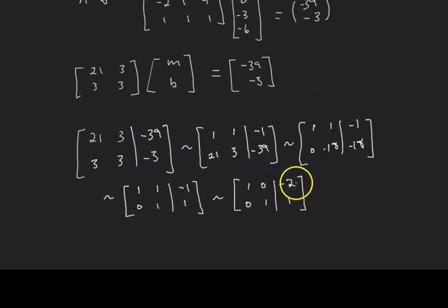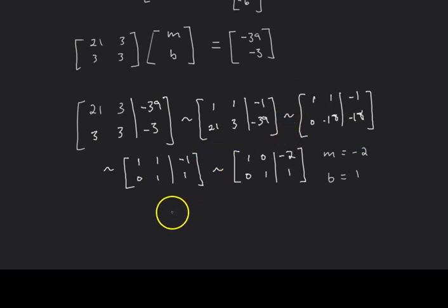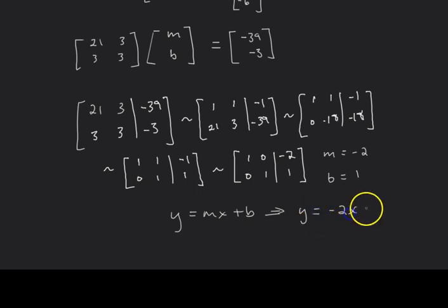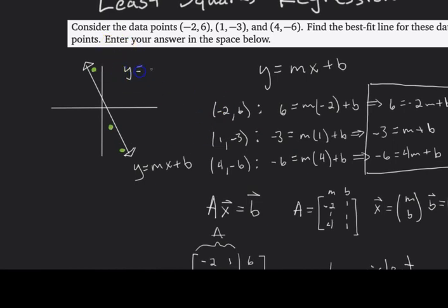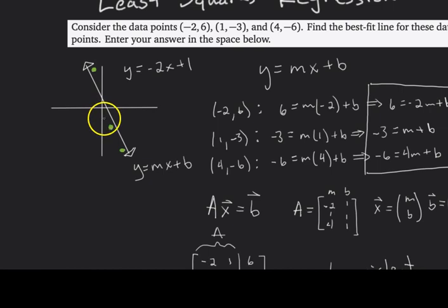I row reduced the augmented matrix all the way to reduced row echelon form, and the solution is m = -2 and B = 1. Now we can write our least squares regression line: y = -2x + 1. That's our answer. Checking visually against the sketch, this line intercepts at y = 1 and has slope approximately -2, which looks accurate.